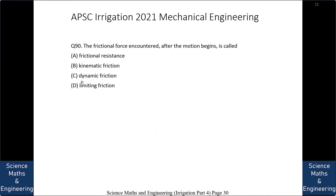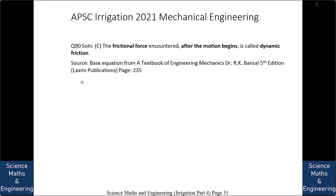The frictional force encountered after the motion begins is called: A. frictional resistance, B. kinematic friction, C. dynamic friction, or D. levitic friction. The answer is C: dynamic friction. Once the body has started to move, the frictional force is known as dynamic friction. If it were not moving it would be kinematic friction, and if on the verge of moving it would be the limiting force of friction.